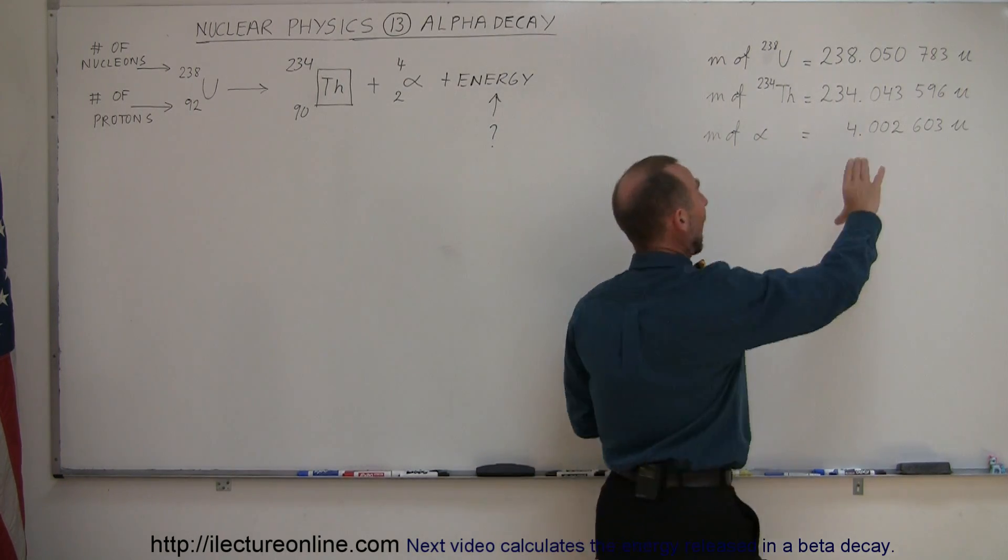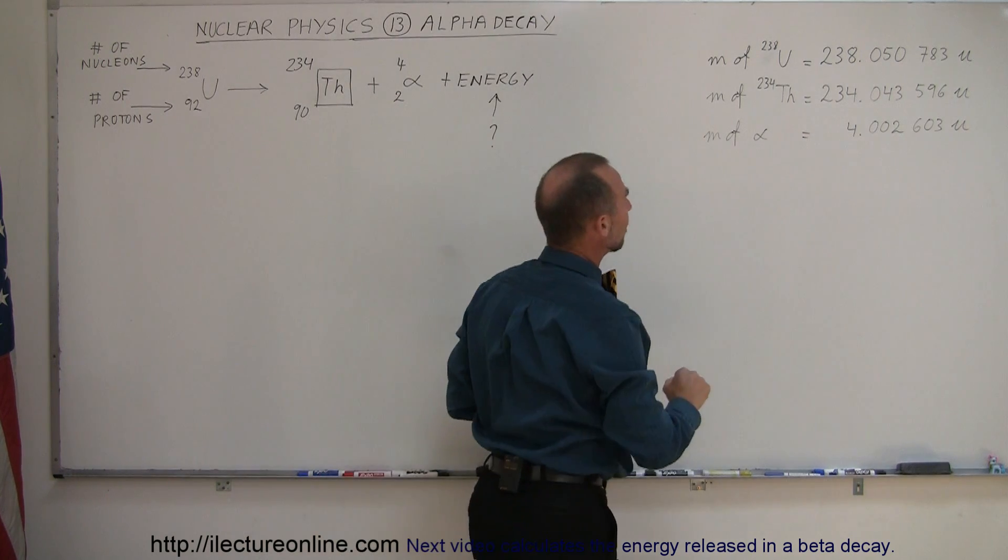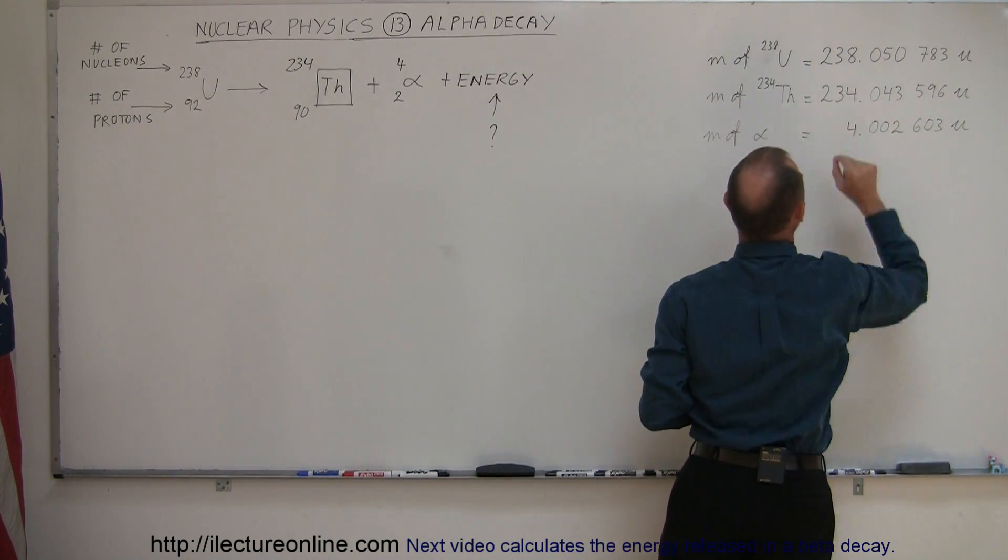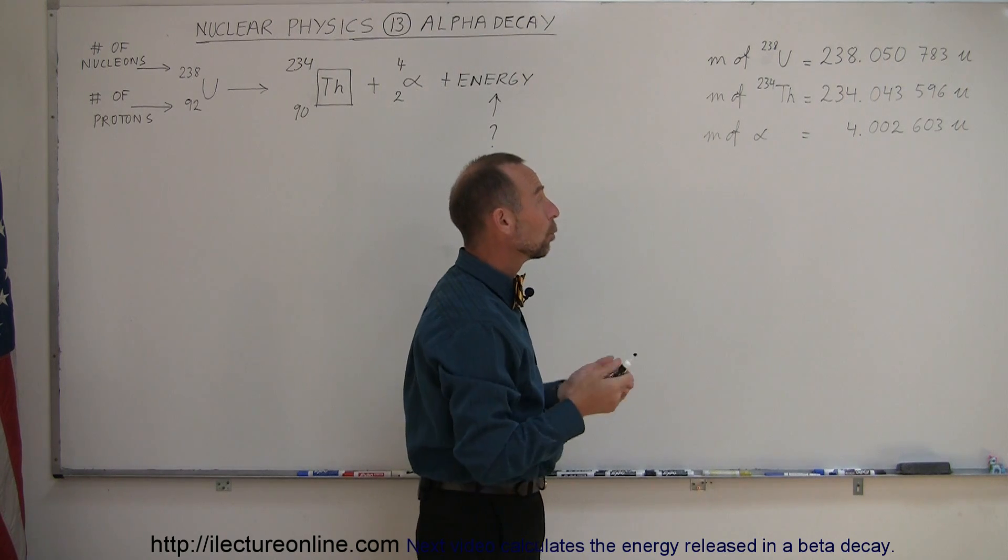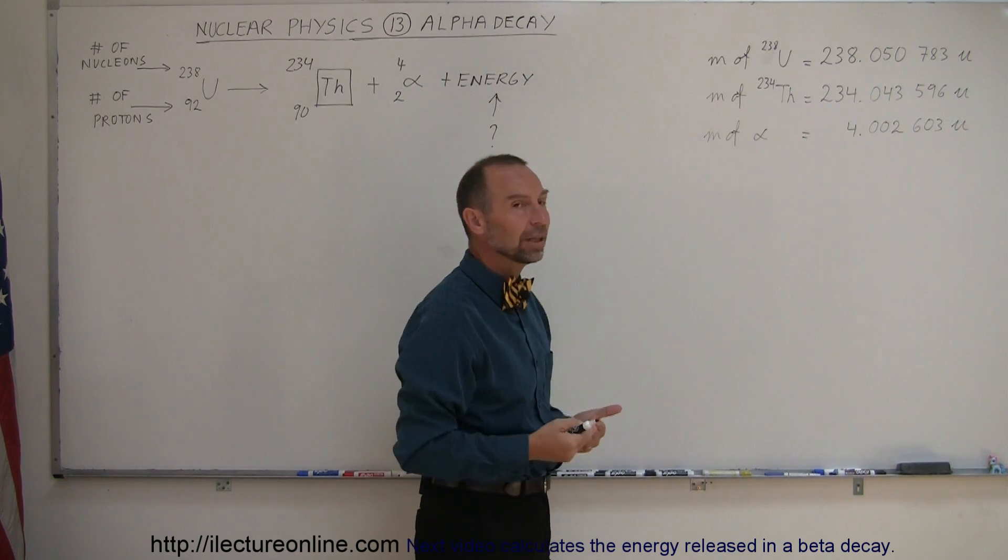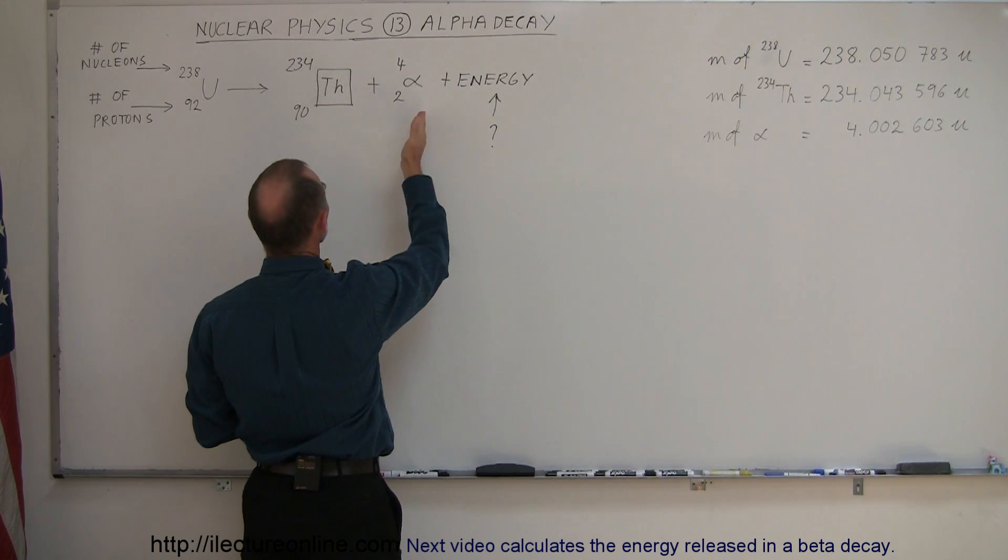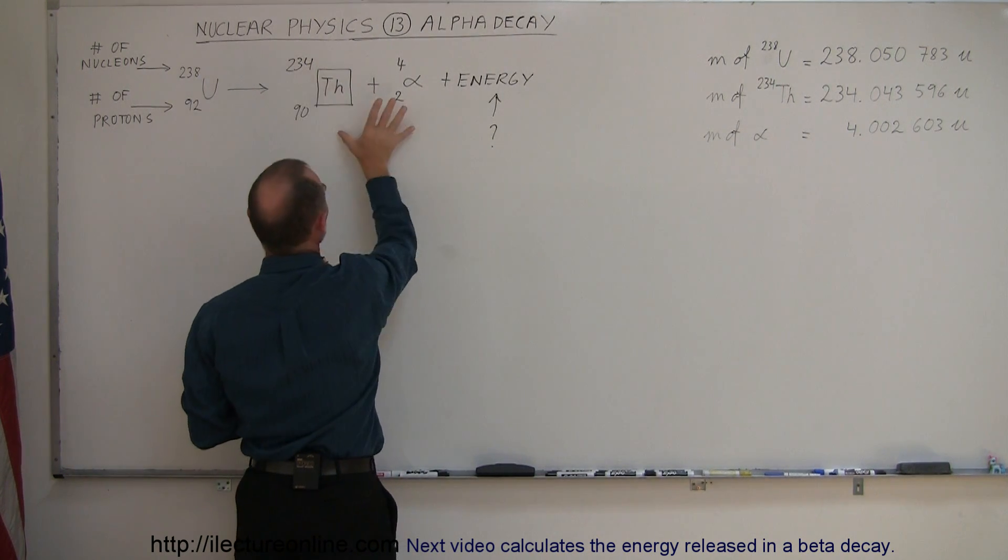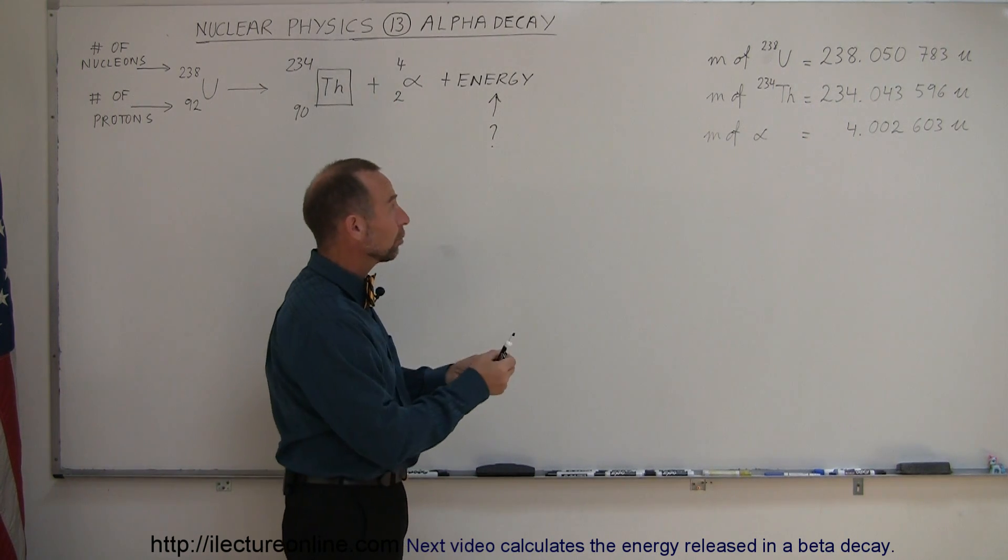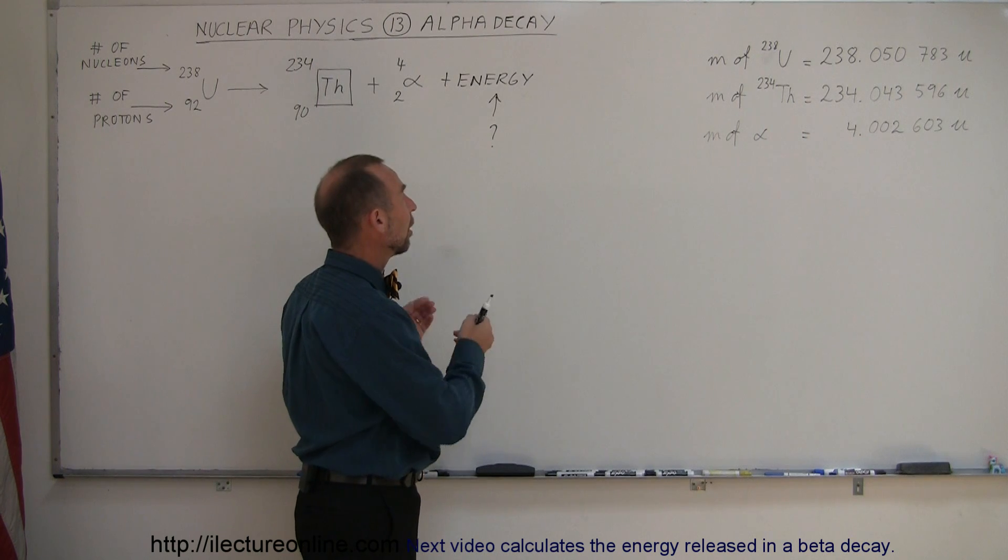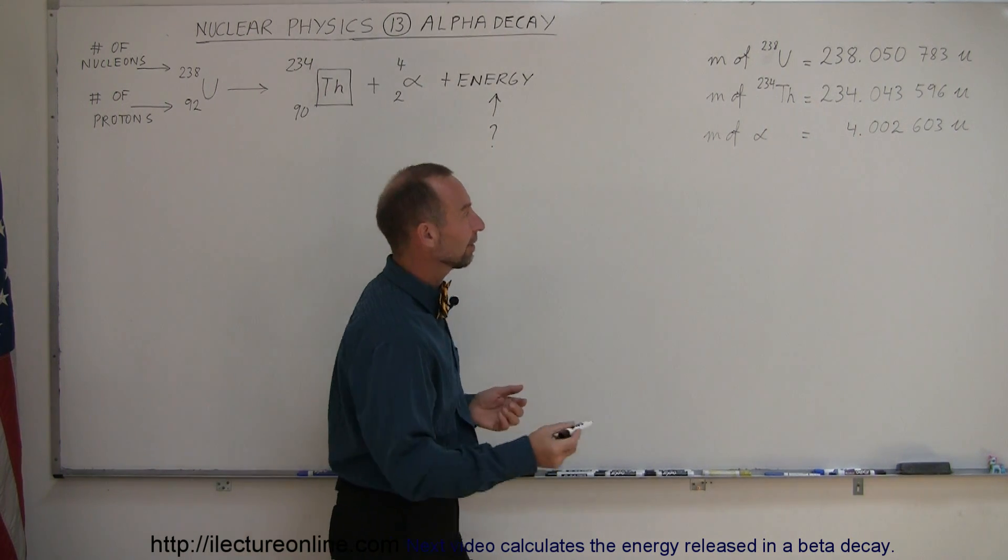And so what we're going to do now is we're going to add these two together, which is the total mass of the right side of the equation, subtract that from the top number here, and the difference in the mass, which is called the mass defect, will then be the amount of energy that's released, because in a reaction like this, an alpha decay, energy is released when something breaks down into its daughter products. And the energy release is equal to the mass equivalent energy of the difference between those two, which is called the mass defect. All right, let's get to it.